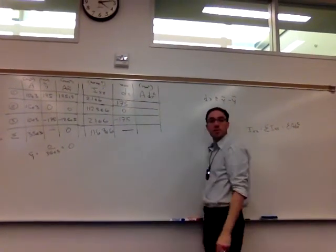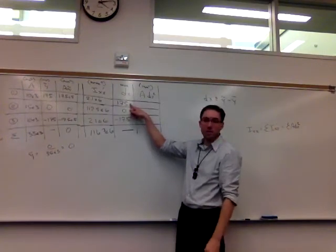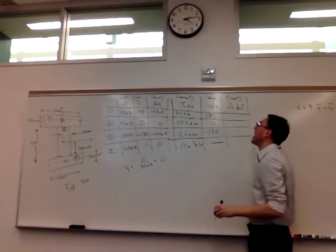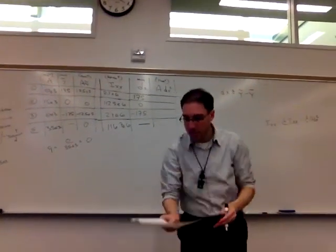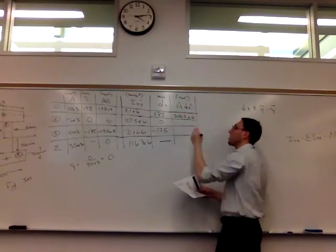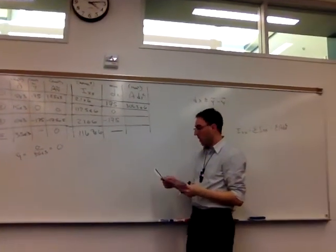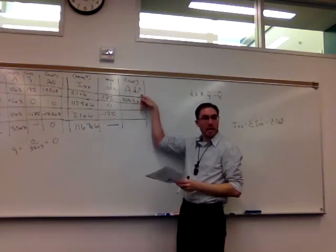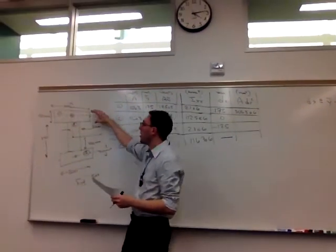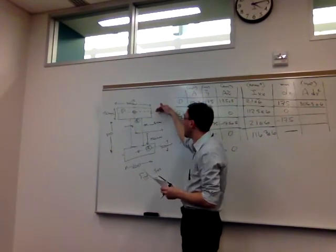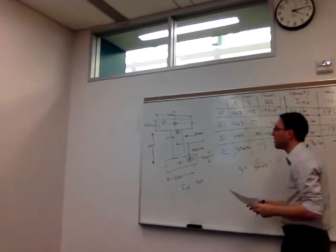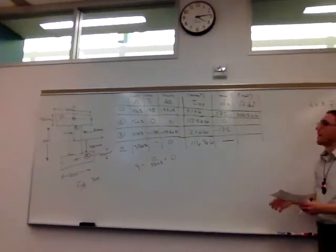Last column, we just take the area of the shape times this dx squared. 10,000 times 175 squared gives us 306.3 times 10 to the sixth for shape one. This is that adjustment term. Again, this is compensating for the fact that this is only the moment of inertia about its own axis, but we need the moment of inertia about the composite shape centroid. So that's why we're adding values here.